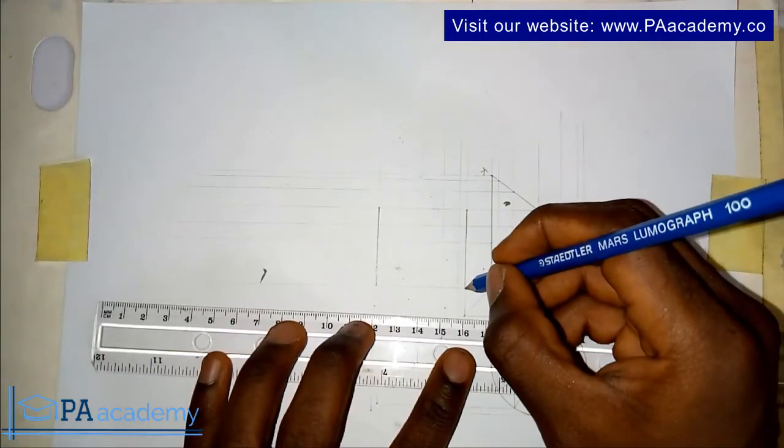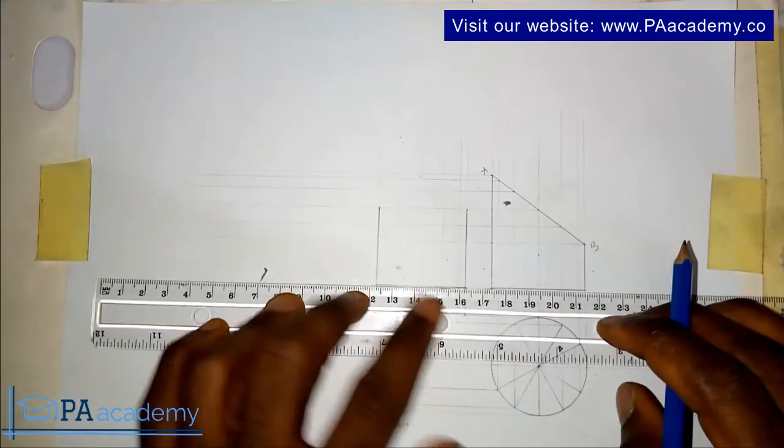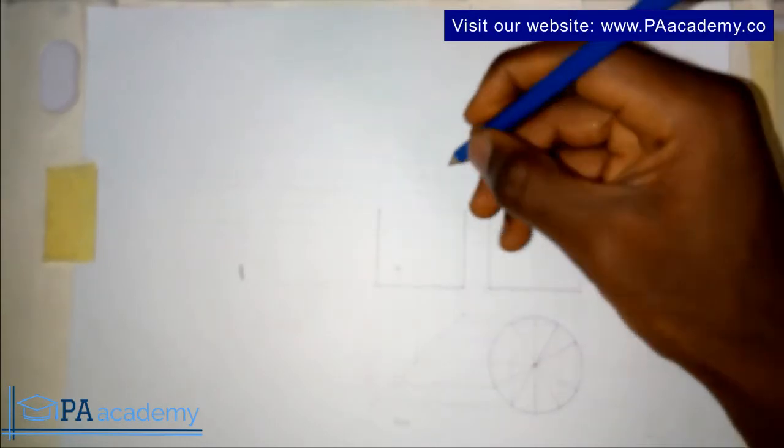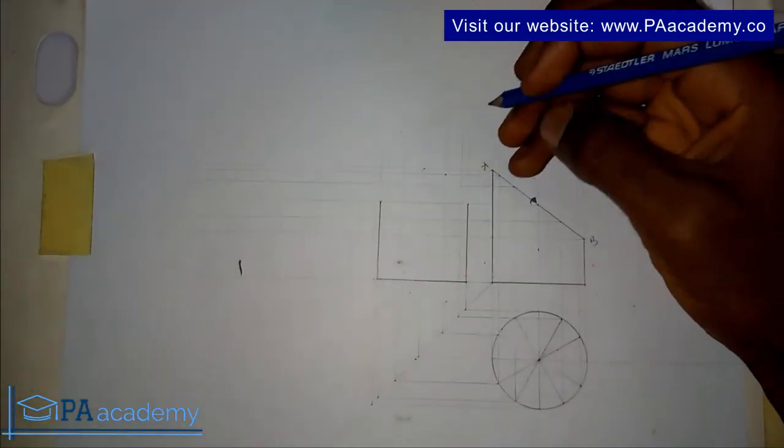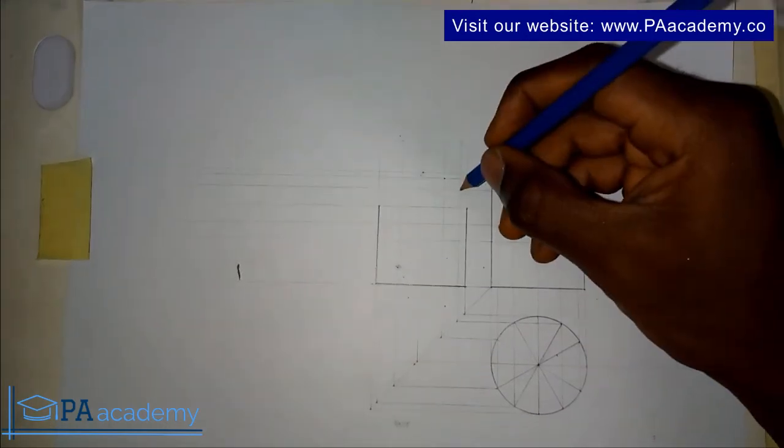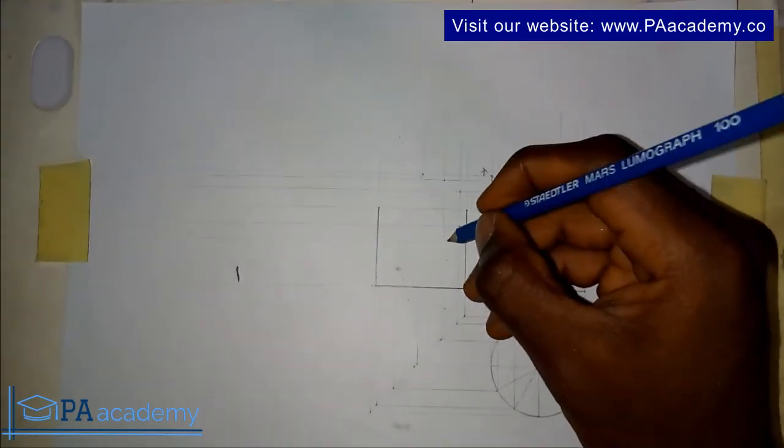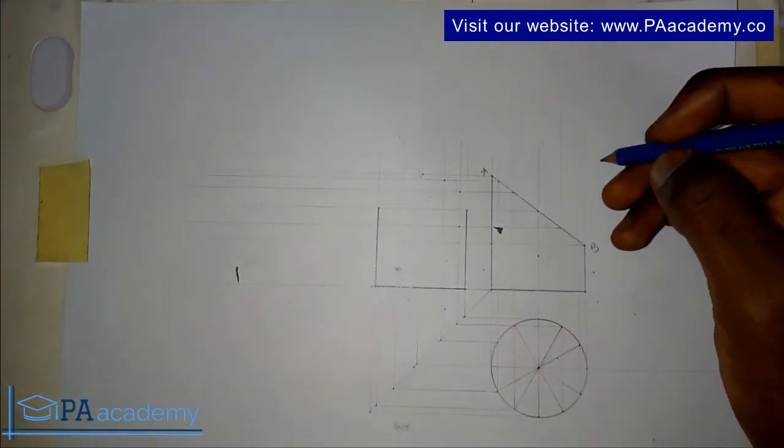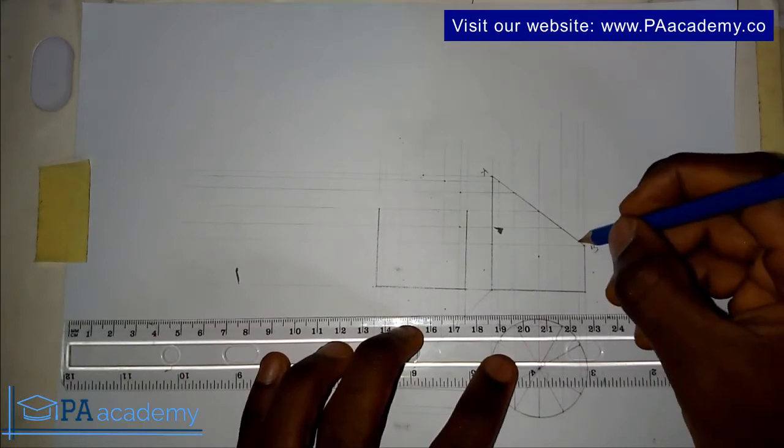I'm using a thick line. The next thing is we are going to be joining these points. The point of intersection here, here, here, here. There's still one more line from this point.